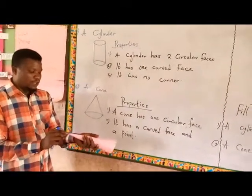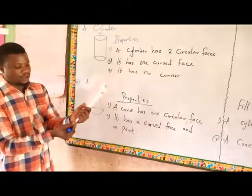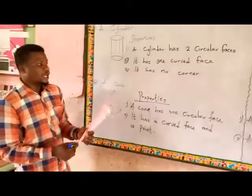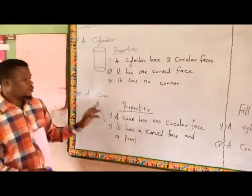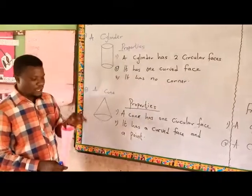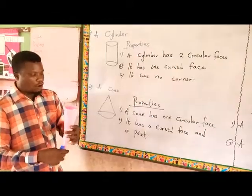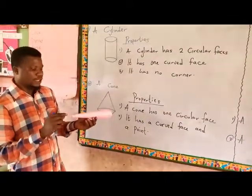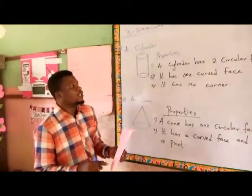And also a point, just like this. This is a point that a cone is having. Once again, a cone has one circular face, one curved face, and a point.